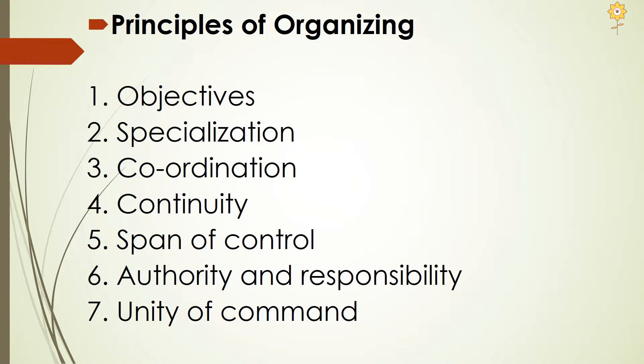Span of control is another principle, which means the number of subordinates who can be effectively managed and supervised by a manager — there should be a limit on this. Next is the principle of authority and responsibility — a very interesting combination where one without the other cannot happen. Authority is the power to take decisions, whereas responsibility is the obligation to perform. If you have the power to take decisions, you must also be responsible for those decisions. There must be a proper balance between authority and responsibility.